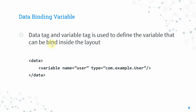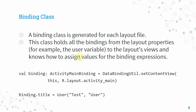Inside the layout tag, you can define variables — the data you want to bind with your views. For instance, you can define a variable named 'user' with the type of a User class. Android Studio then auto-generates a binding class when you rebuild the project. This binding class holds all bindings from layout properties and views, and knows how to assign values for binding expressions — so no need to call findViewByID.